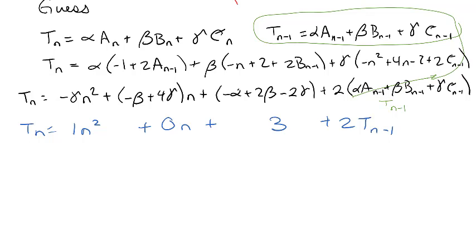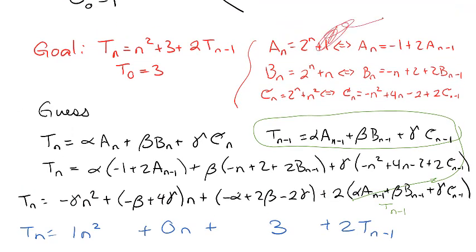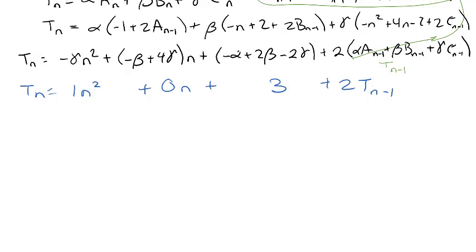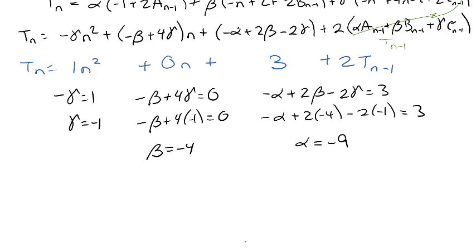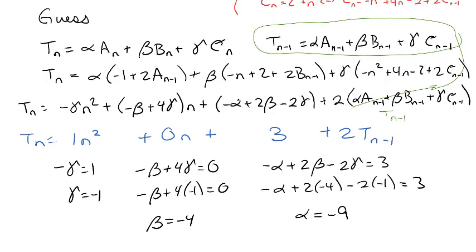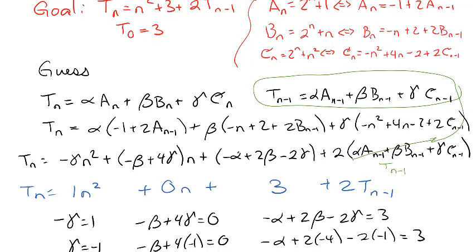It is possible you get something like 1 equals 0, which means you used an incorrect repertoire. I did that a couple times before making these videos. Once I have values for alpha, beta, and gamma — setting gamma equals negative 1 from the n² coefficient and solving — I can substitute the closed form versions of a_n, b_n, c_n instead of the recursive versions. That gives me a closed form for my recursion.